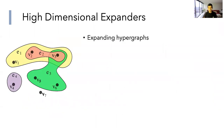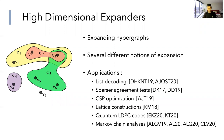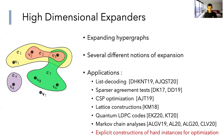High dimensional expanders are expanding hypergraphs instead of graphs. There are many ways of capturing what it means to be an expanding hypergraph, and not all definitions are equivalent. Although this is a relatively recent area, it has already had a huge number of applications. Today I'll be talking about applications to constructing instances which are hard for certain optimization algorithms or certain families of algorithms.